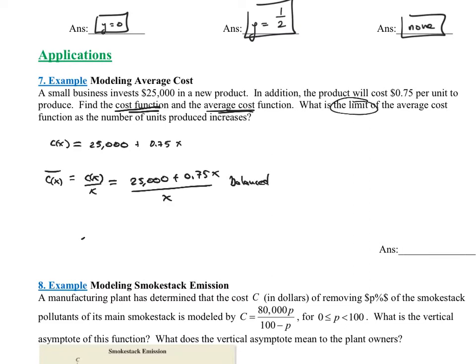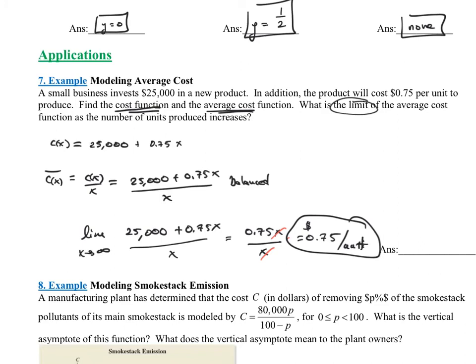So it says, what is the limit of the average function? What they're wondering is, what is the limit as X approaches infinity of this average cost function, which is $25,000 plus 0.75X all over X? When I do that, because it's balanced, I know that it's going to be equal to the ratio of the leading coefficients, which is 0.75X divided by X. The X's simplify, and I'd end up with 0.75. So what does that mean? Well, this is average cost, so this would be dollars per unit. What this is saying is the average cost is 75 cents per unit. That's what the limit means in this case.